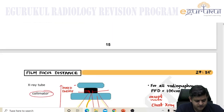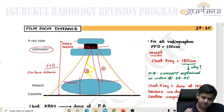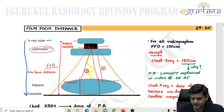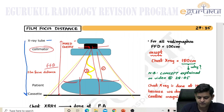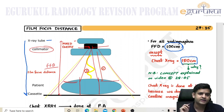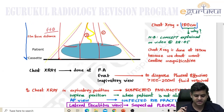A very important point to remember is the film focus distance — the distance from the x-ray tube to the cassette. For all radiographs, the film focus distance is 100 centimeters, except for the chest x-ray. To reduce cardiac magnification, the film focus distance in a chest x-ray is 180 centimeters.